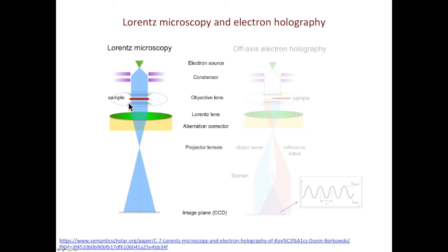Notice the sample sits here. The objective lens is supposed to be here. And down here, you see an extra lens called the Lorentz lens. So in a Lorentz microscope, the Lorentz lens replaces the objective lens.